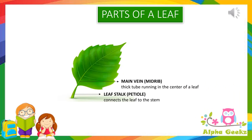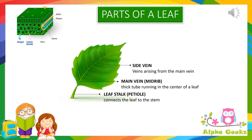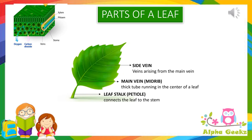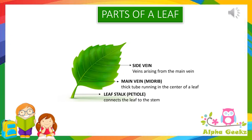The main vein is a thick tube running in the center of the leaf and is also called the midrib. From the main vein arises a number of thinner veins called side veins. The main vein and the side veins have tiny tubes inside them. Some tubes help to carry water and minerals to all parts of the leaf, and the other tubes carry food prepared by the leaf to other parts of the plant.